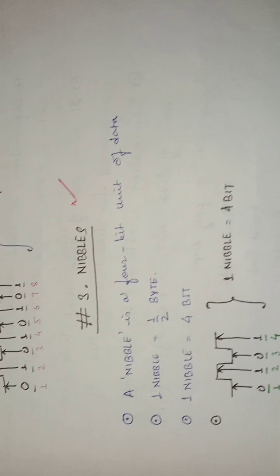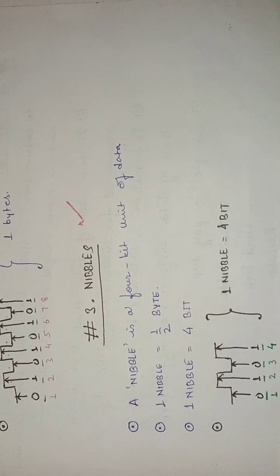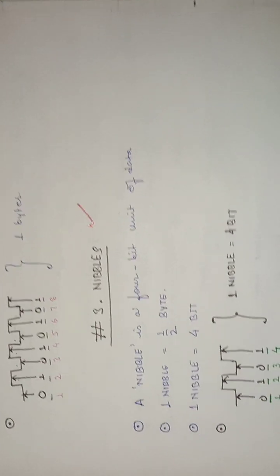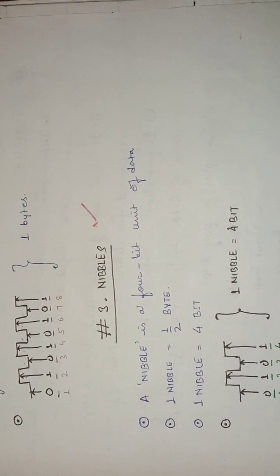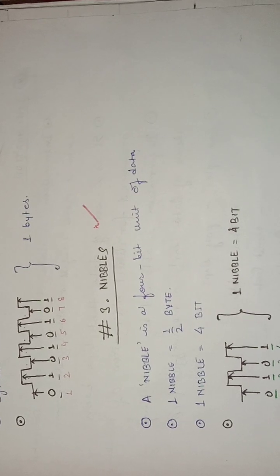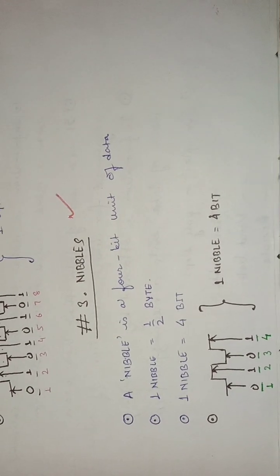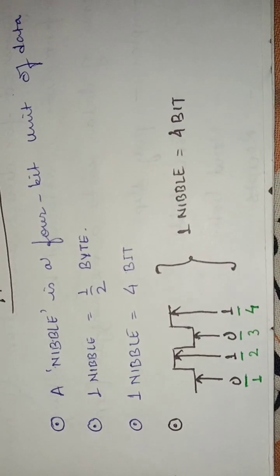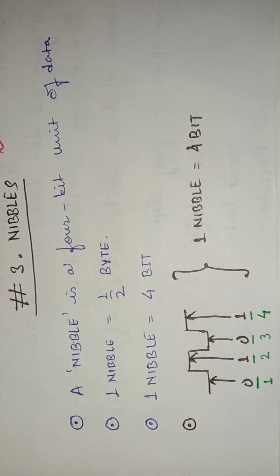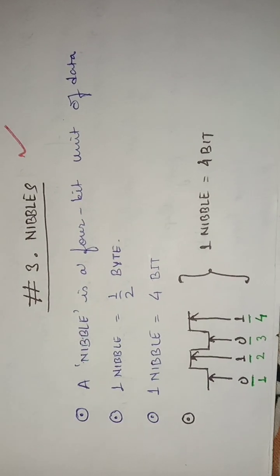One nibble is a four-bit unit of data. One nibble is equal to four bits and also equal to half a byte, because eight bits equal one byte and one nibble equals four bits, so one nibble equals one-half byte. You can see that this is one byte and this is one nibble — for example, 1-1-0-1-0-1 represents four bits of data, which is one nibble.